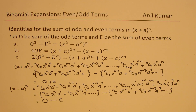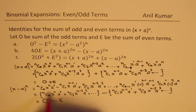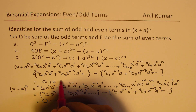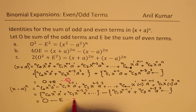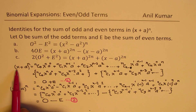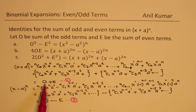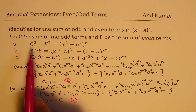These are two important equations we will use to prove the identities. Equation 1: (x + a)^n = O + E. Equation 2: (x - a)^n = O - E. In the expansion (x + a)^n we get the sum of odd and even terms, and in (x - a)^n we get their difference.